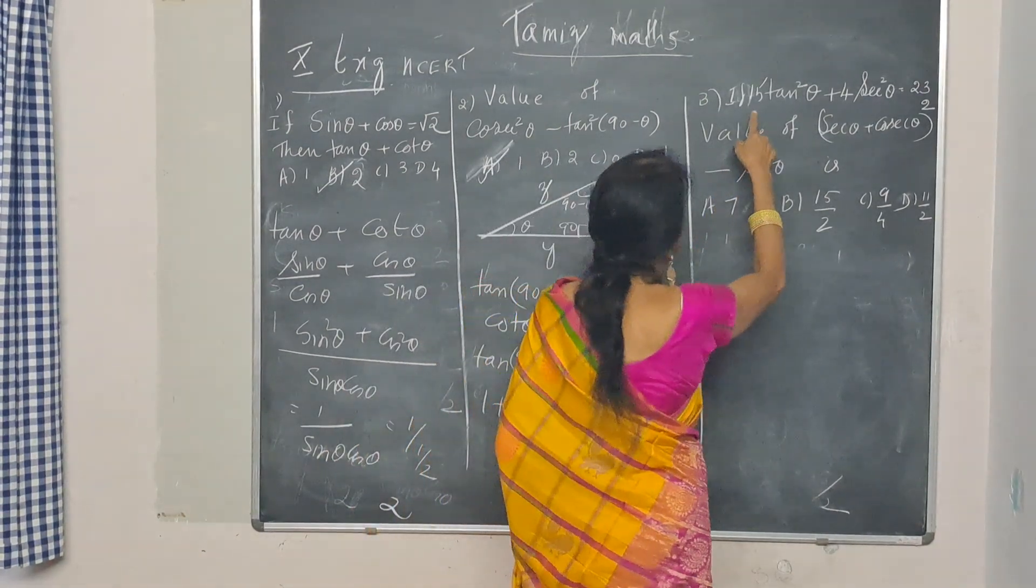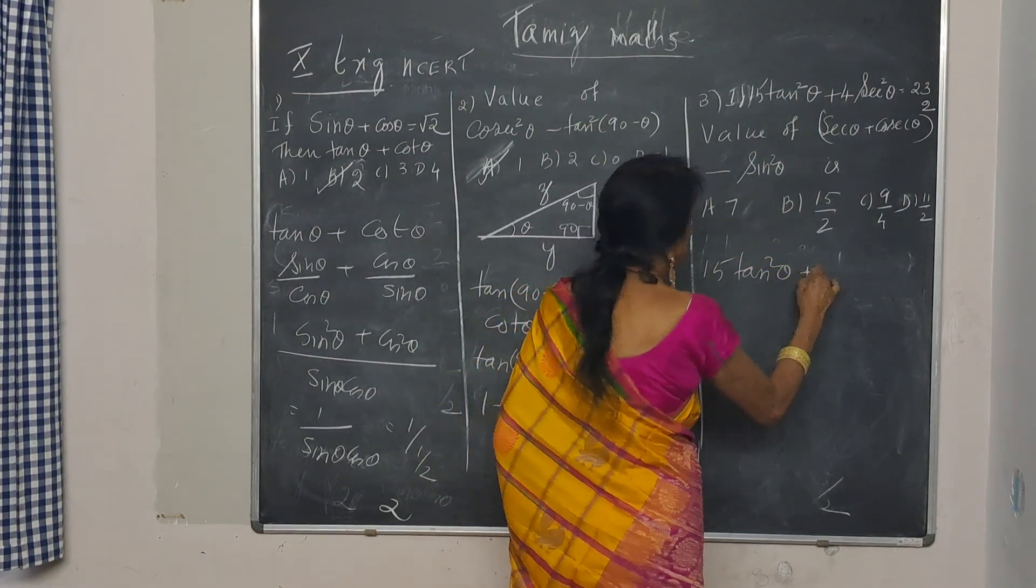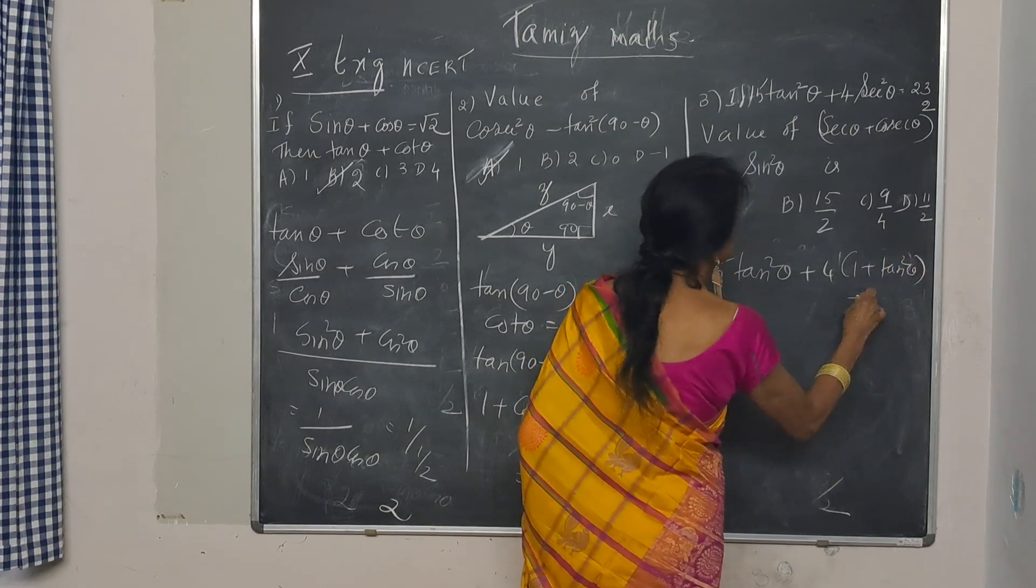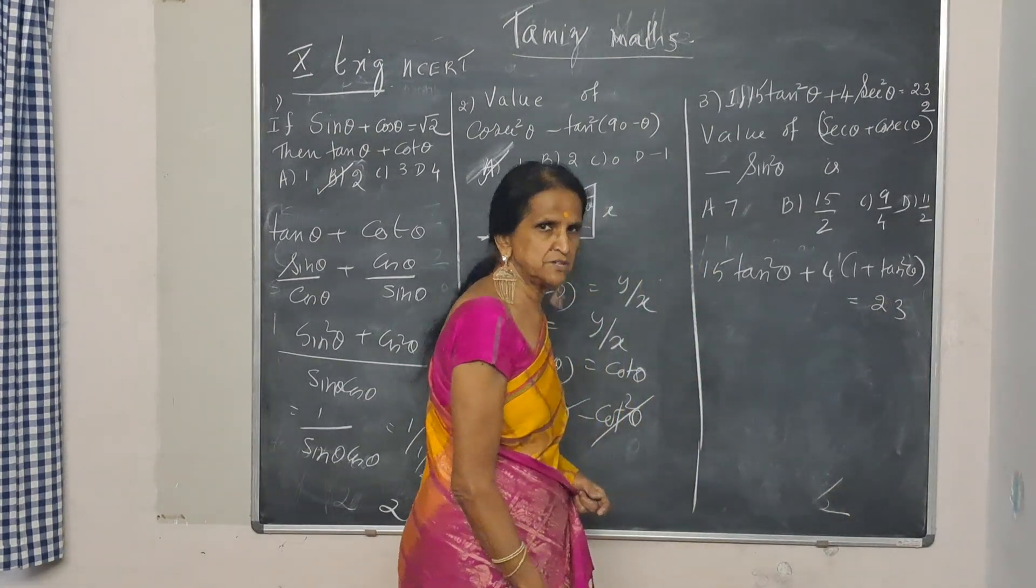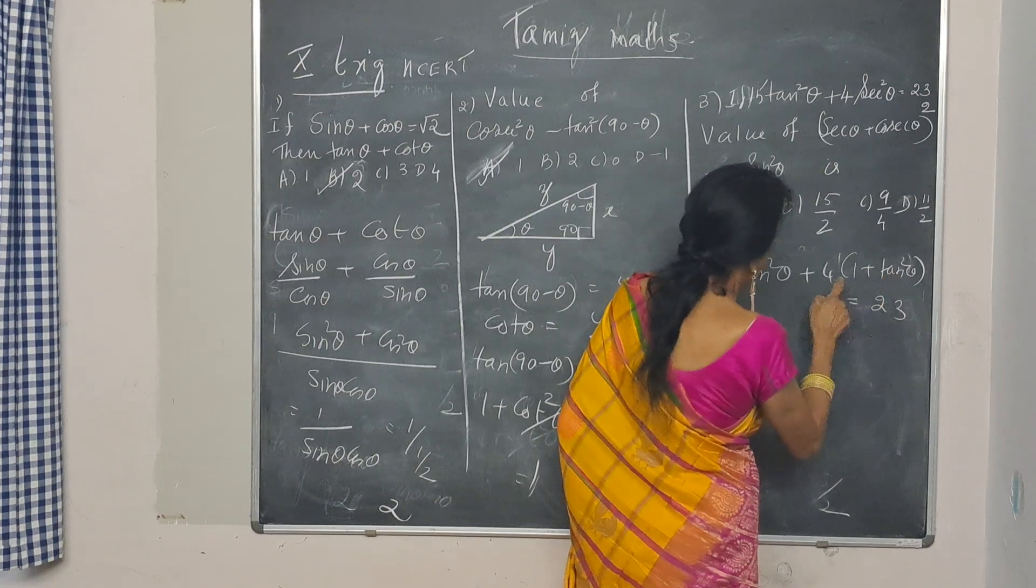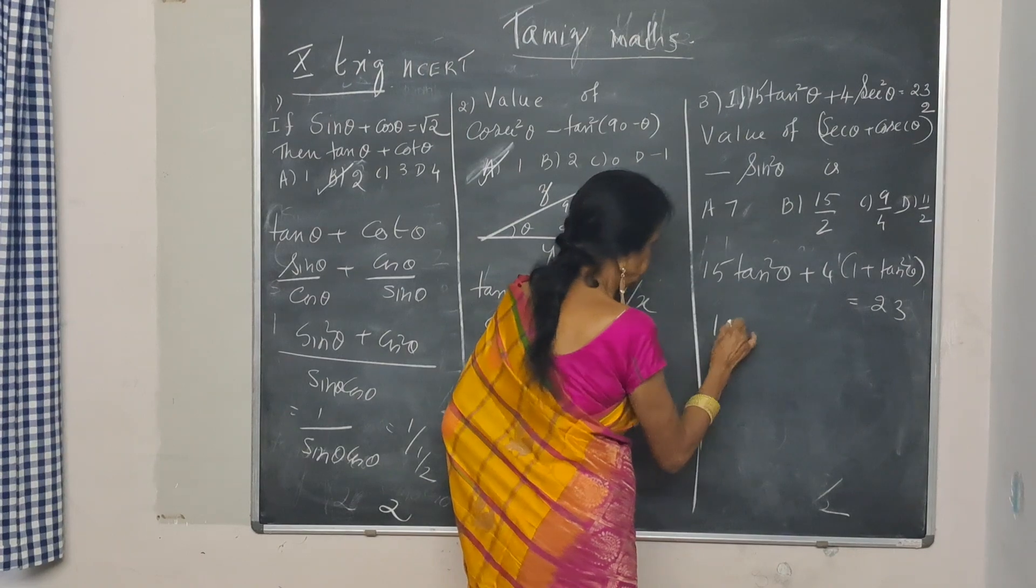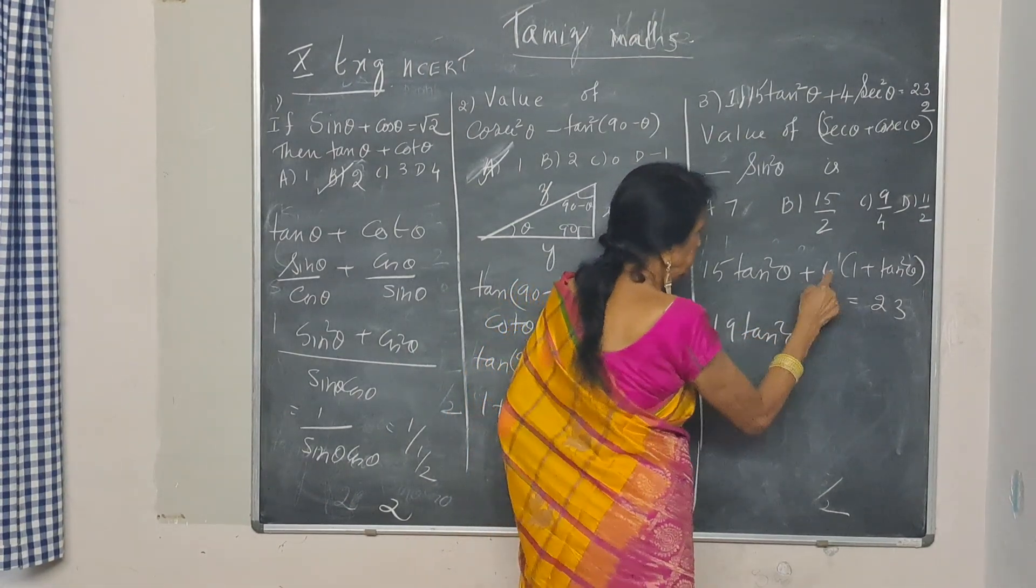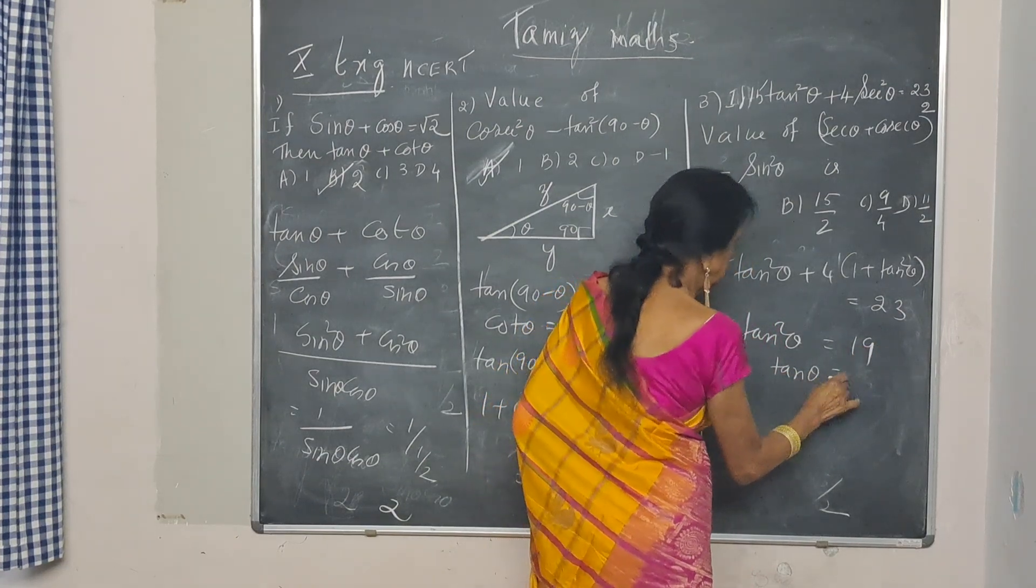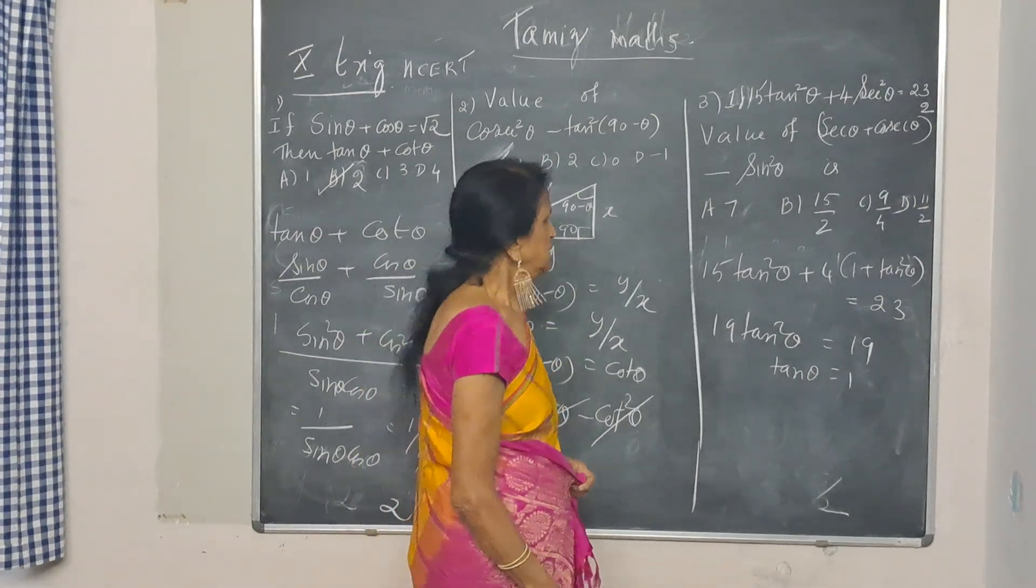Now, 15 tan square theta plus 4 into 1 plus tan square theta. Secant square theta is 1 plus tan square theta. 15 plus 4, that's 19. Minus 4 goes to that side, 19 minus 4 is 15. So tan square theta is 1. Tan theta is 1. Of course, plus or minus 1. But we take it as 1.